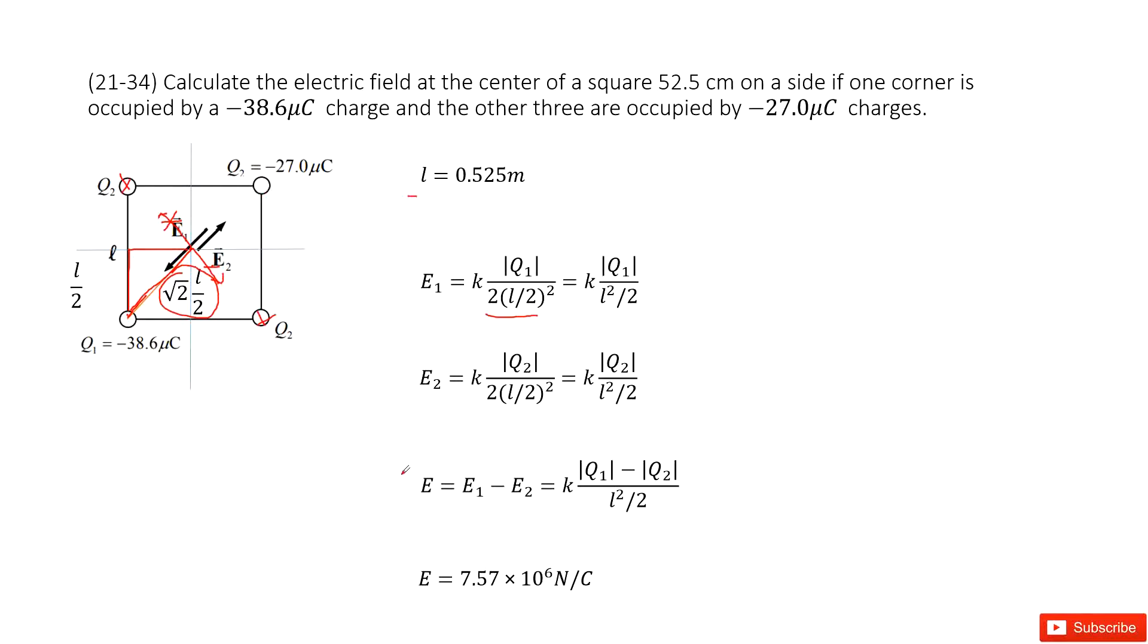Now we can get the magnitude for the electric field at the corner as the magnitude E1 minus the magnitude E2. And it looks like this one. And input the known quantity inside, we get the answer there. Thank you.